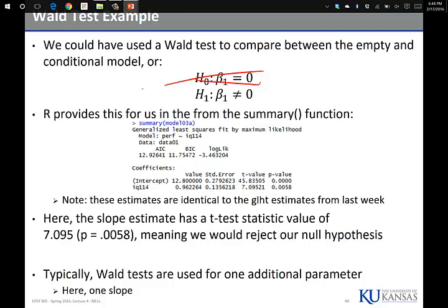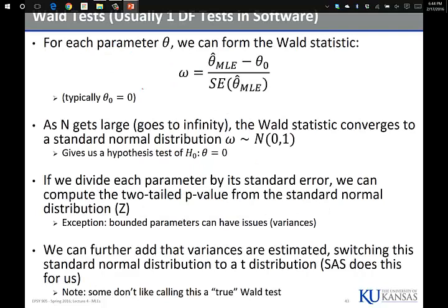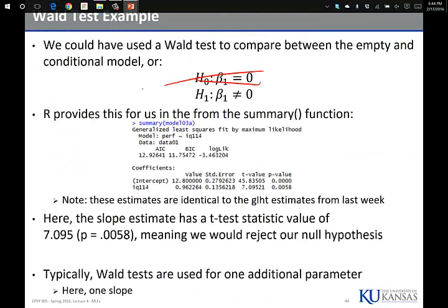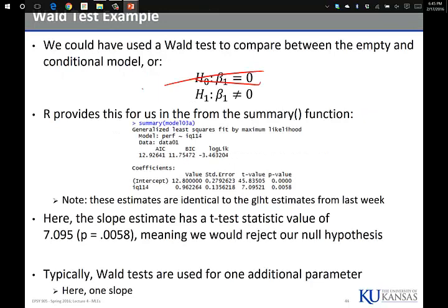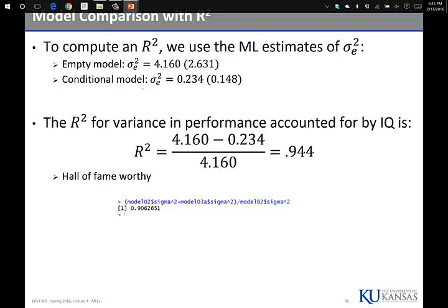Wald tests generally come from coefficient or parameter estimates, so we often just use them with one parameter. The nice thing about Wald is you only have to run one model. We're testing the same hypothesis, but with one model. In the limit — if N was infinity — the likelihood ratio and Wald would converge to the same result. If we compare our estimate of residual variance, we'd see that the residual variance from the empty model is 4.16 and from the conditional model is 0.234. Taking the difference and dividing by the original value, we see we explained 94.4% of the variance.